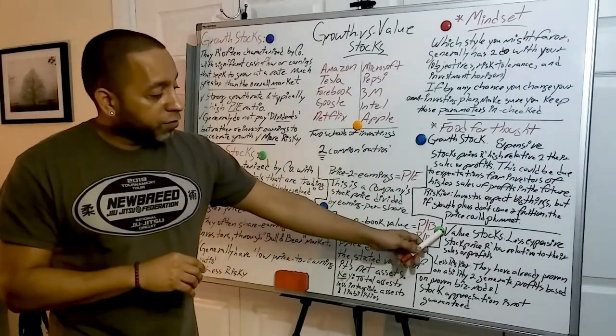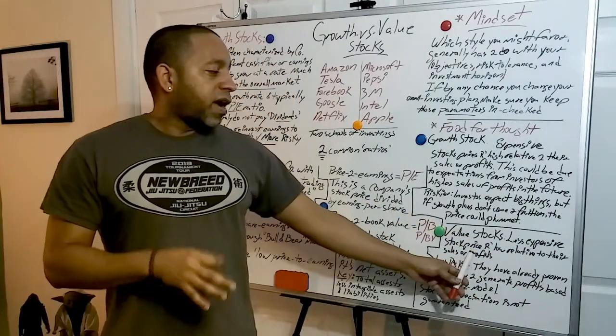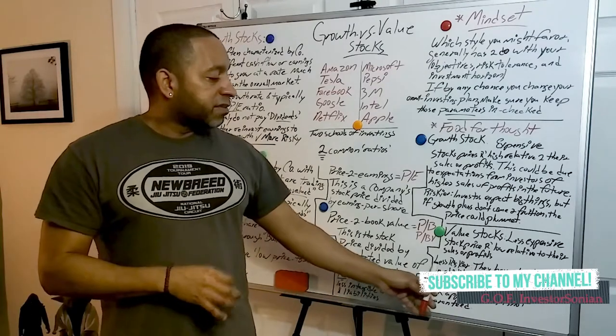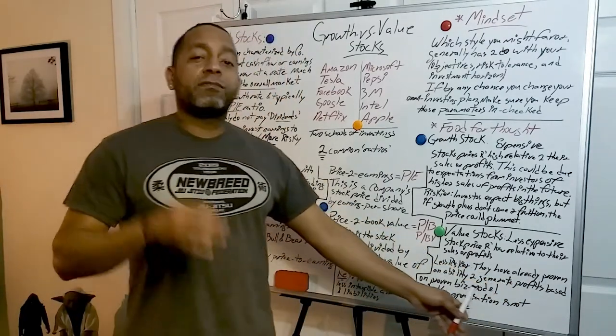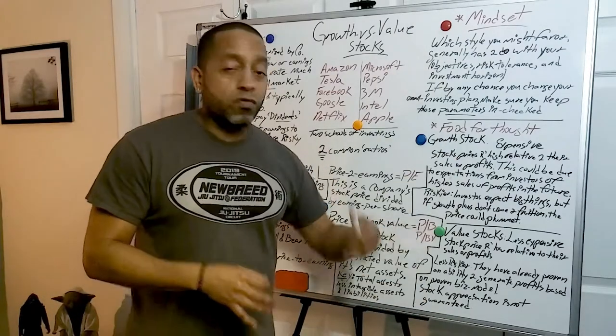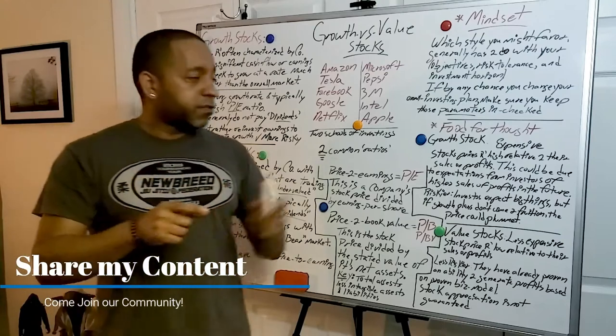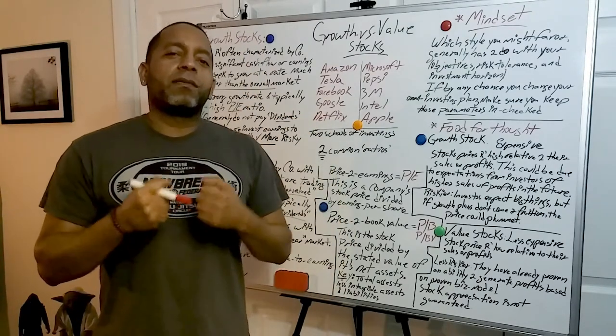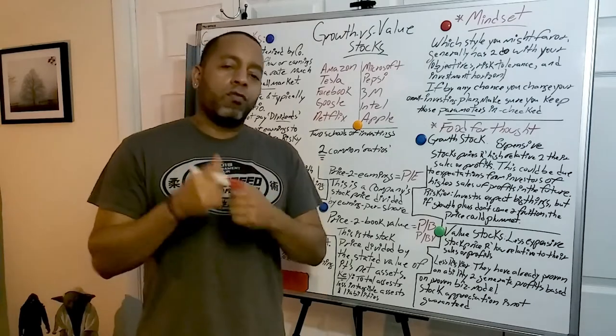Moving along to the green top right here, guys. So, value stocks. Element, less expensive. Stock prices are low relative to their sales and profits, similar to the growth stocks. Less riskier. They have already proven an ability to generate profits based on proven business model. That's what I love. Next one, stock appreciation is not guaranteed. But then again, this applies to even growth stocks. Appreciation is not guaranteed. That's why I always said you have to keep in mind for the risk and the rewards. Cool beans. So, make sure that you keep that in mind. When a company has already a proven track record, it brings a higher peace of mind. And that's what we want as investors. So, we can put our hard-earned money into a company that is trustworthy.